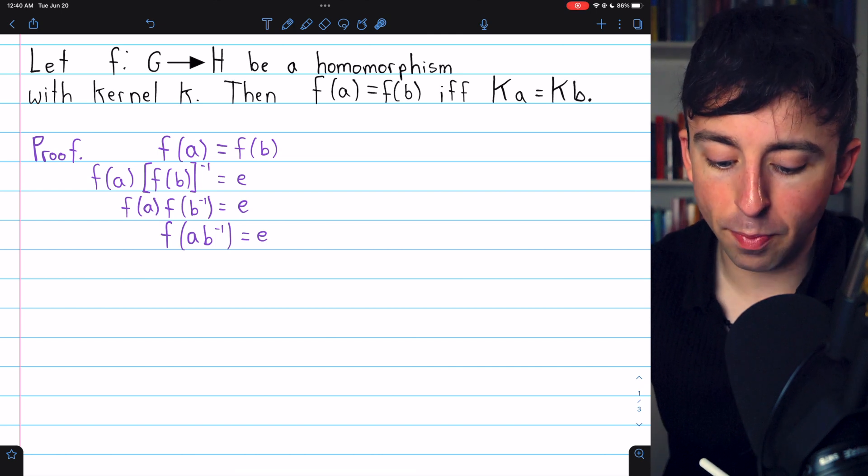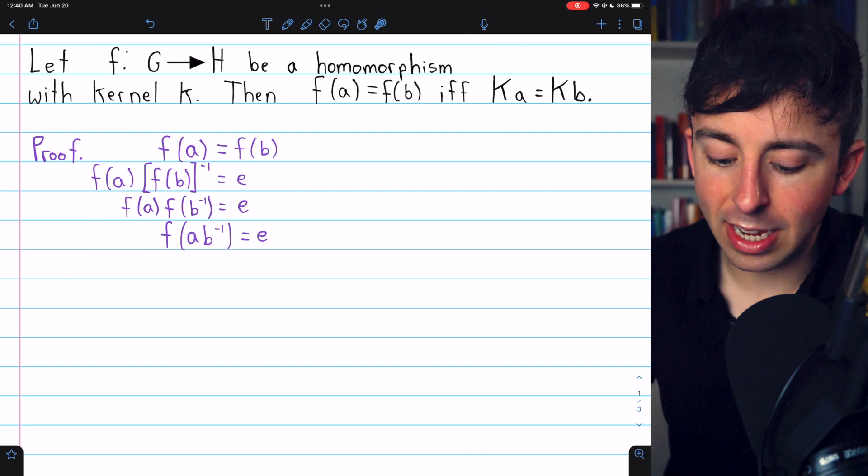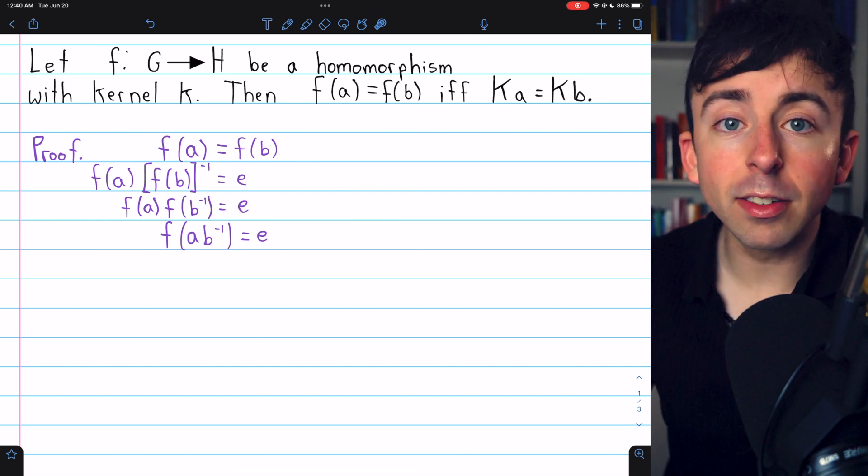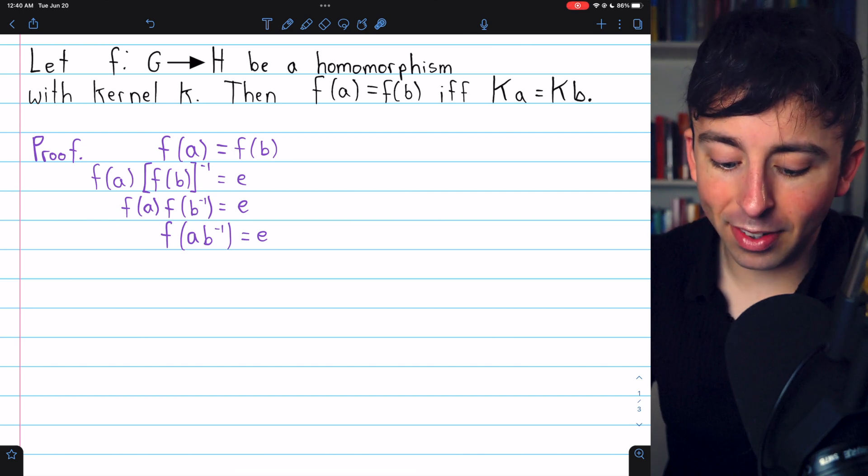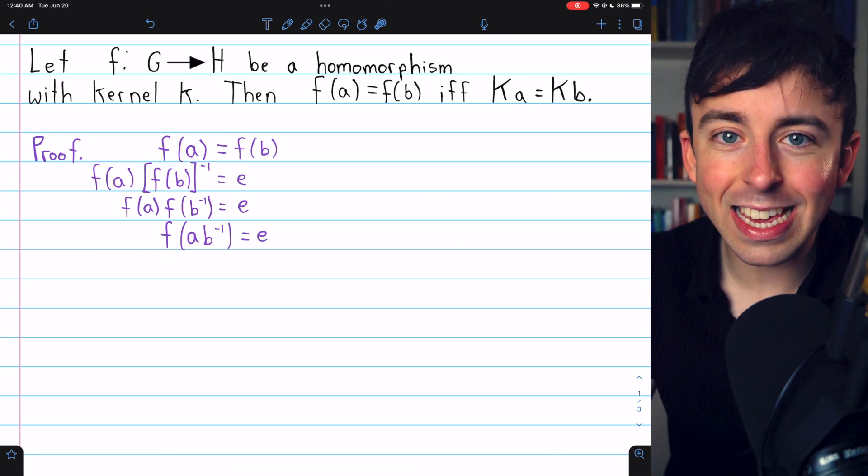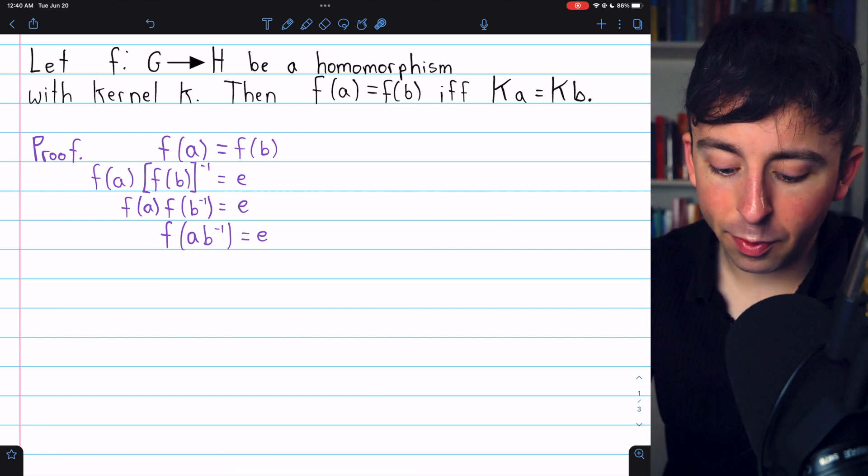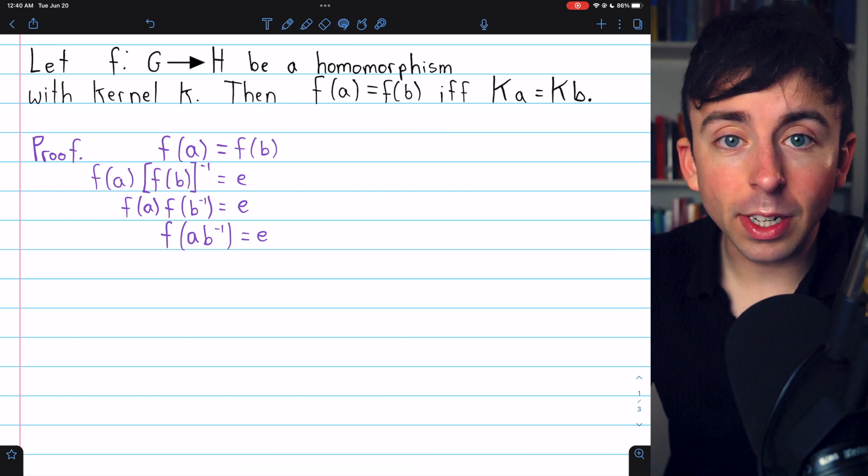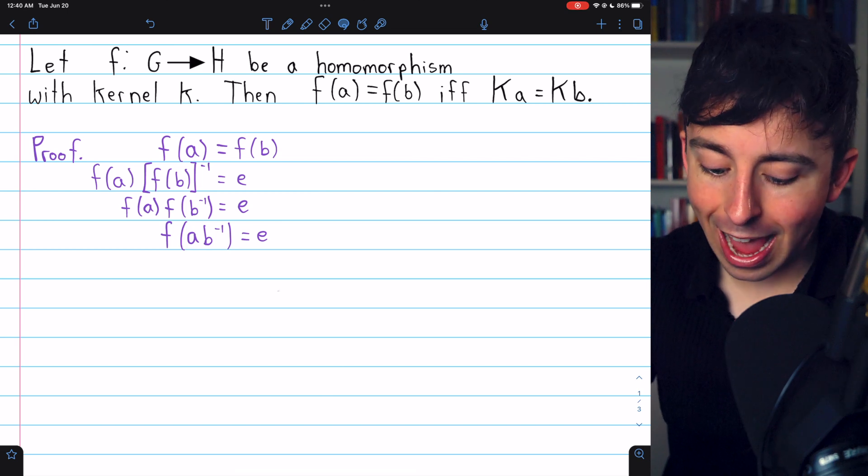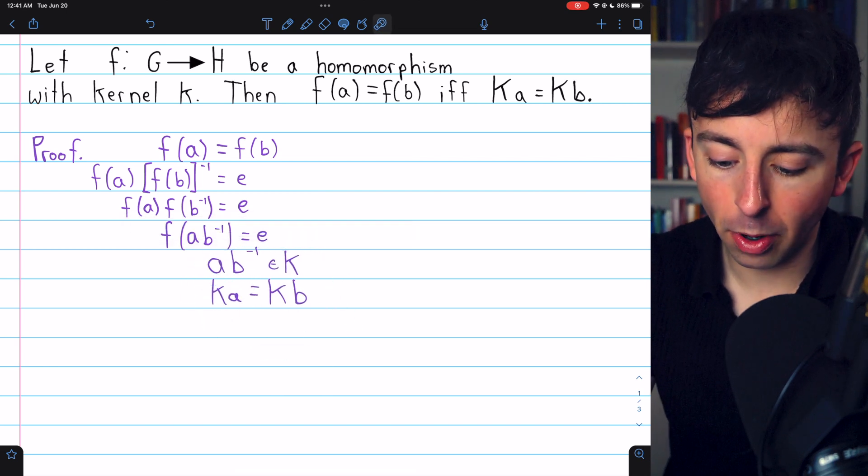Link in the description to the lesson where we prove that. So we have that F(a) times F(b inverse) equals e, but because F is a homomorphism, that's the same as saying that F(ab inverse) equals e. So we see that ab inverse gets mapped by F to the identity. By definition of kernel, that means that ab inverse is an element of the kernel of the homomorphism.